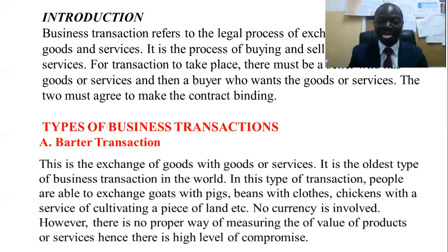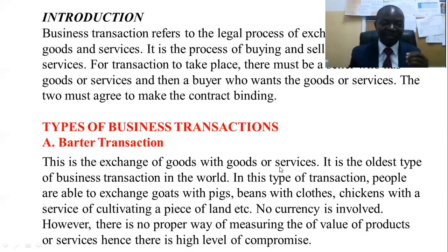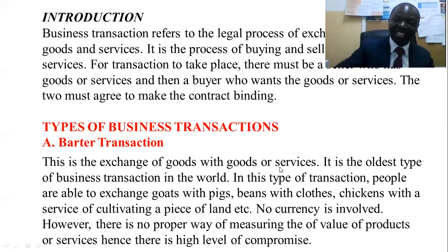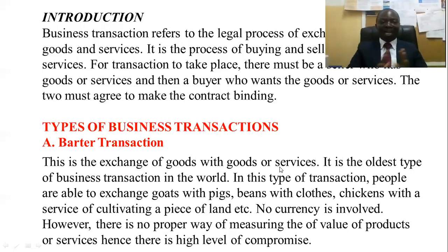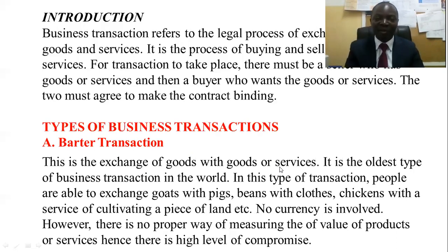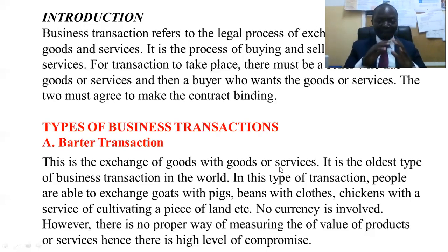There are various types of business transactions. Number one is barter transaction. This is the process of exchanging goods with goods, services with services, or goods with services. For example, a pen being exchanged with a pencil — that's a barter transaction. No currency of any kind is involved: no money, no coins, nothing. It's purely barter transaction and it is the oldest type of business transaction. From time immemorial, people have been exchanging cattle with salt, cattle with cloth, or a goat with some service — that's purely barter transaction.